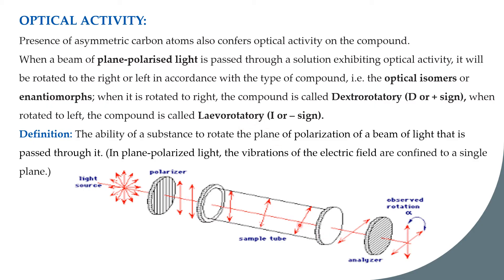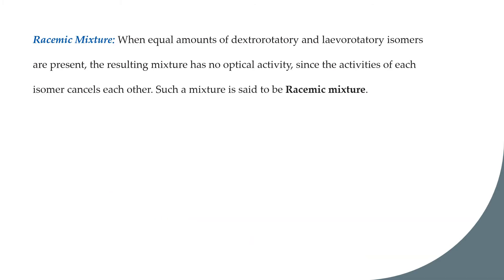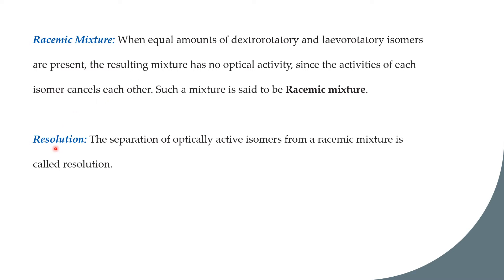The definition of optical activity is the ability of a substance to rotate the beam of plane polarized light that is passed through it, where the plane polarized light has vibrations confined in a single plane. If a solution contains both dextrorotatory and levorotatory isomers in equal amounts, it is called a racemic mixture, and it will show no optical activity as the two isomers cancel each other out.